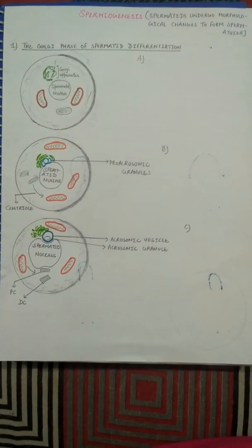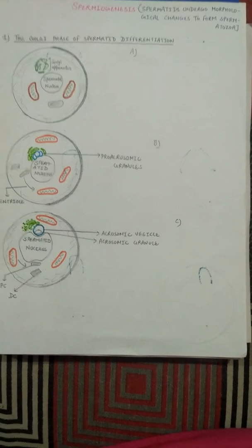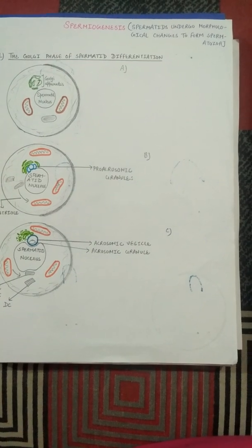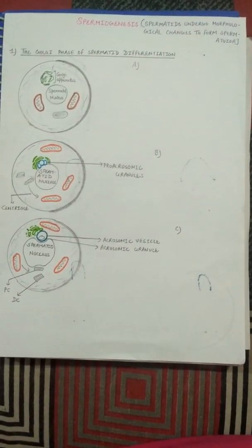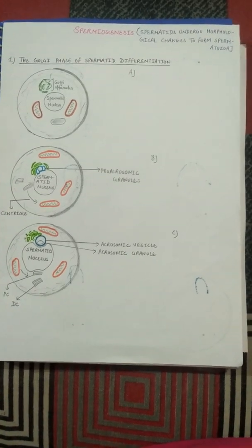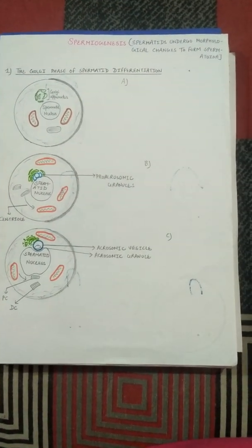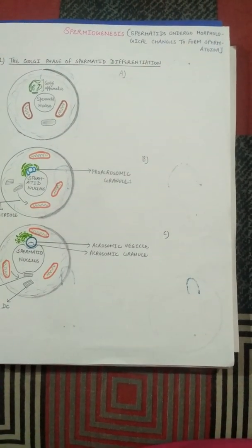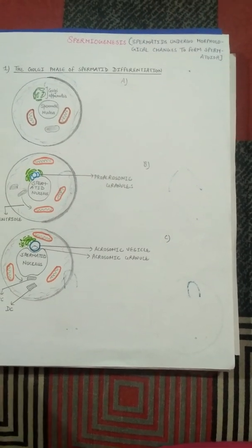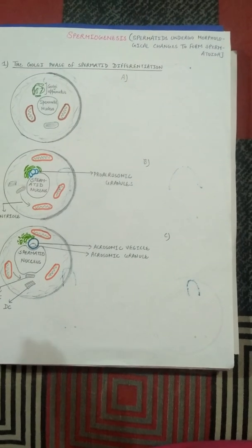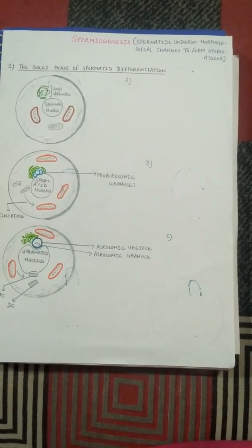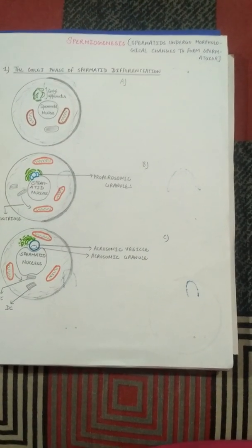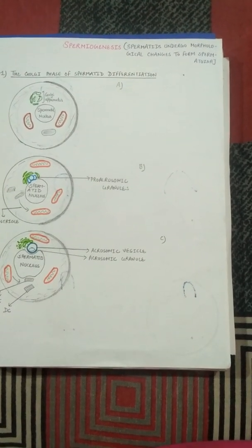Welcome. Today's lecture is on spermiogenesis. There are three main terms used during sperm formation: spermatogenesis, spermiogenesis, and spermiation. Spermatogenesis is the overall process of sperm formation. Spermiogenesis refers to the morphological changes in which an immature spermatid undergoes changes to form a mature spermatozoa. In spermiation, the mature spermatozoa is released into the lumen of the seminiferous tubule.